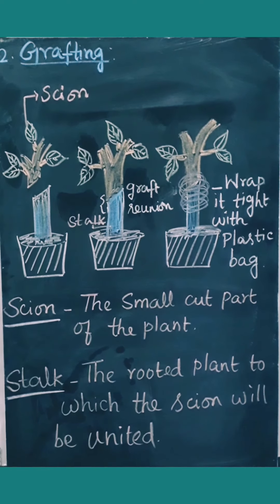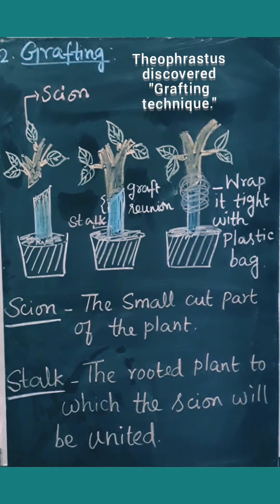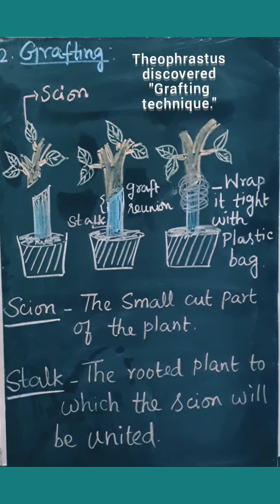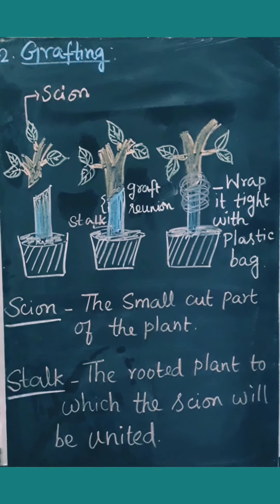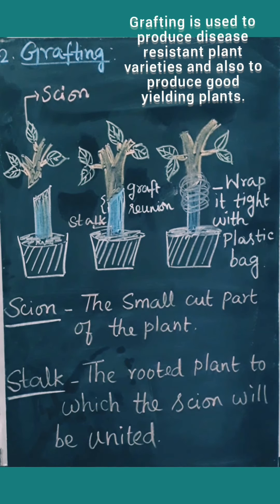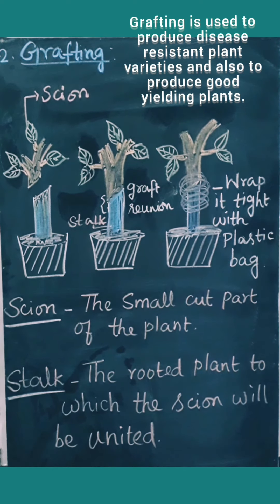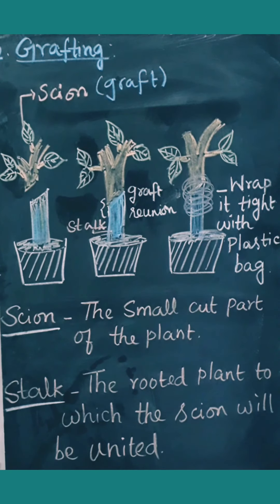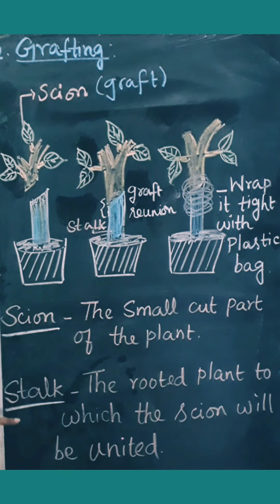The second method of vegetative propagation is grafting. Grafting is carried out when we have two plants — for example, one mango tree yields very big fruit but its fruits are not sweet, and the other tree yields very sweet fruit but its fruits are very small. If we want a tree which yields big as well as sweet fruit, we carry out this grafting technique.